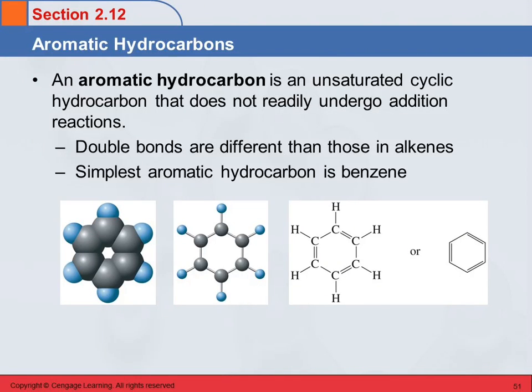Aromatic hydrocarbons are also unsaturated, but these are cyclic compounds, and what's really different about these guys is they do not readily undergo addition reactions. The alkenes and the alkynes undergo addition reactions fairly easily. These aromatic ones do not.